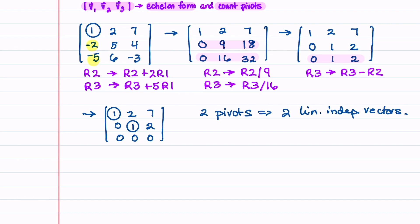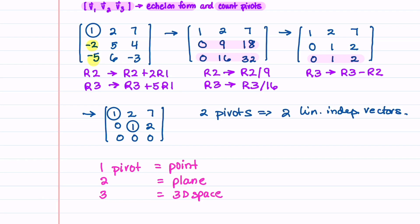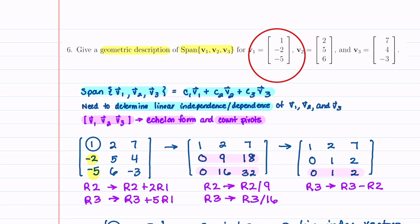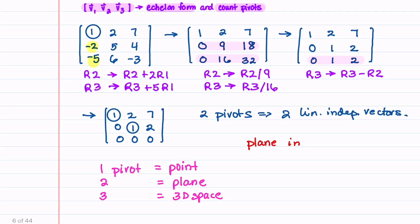Let me summarize: if you have one pivot, the geometric description is going to be a point. If you have two pivots, it's going to be a plane. And if you have three pivots, it's going to be 3D space. Since our vectors have three entries, they are elements of R3, so our geometric description is that the span of these three vectors is a plane in R3.